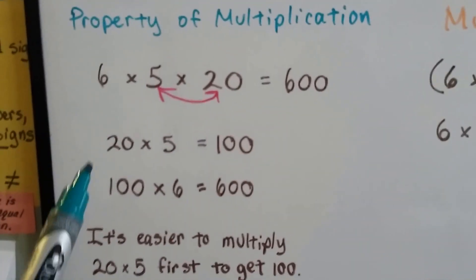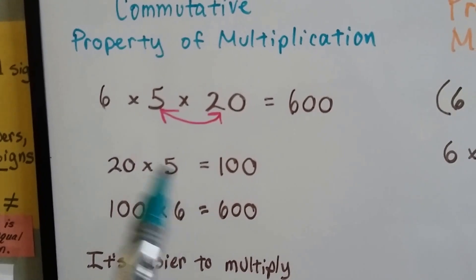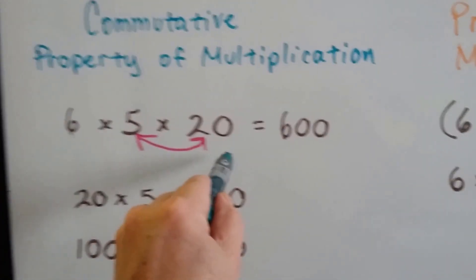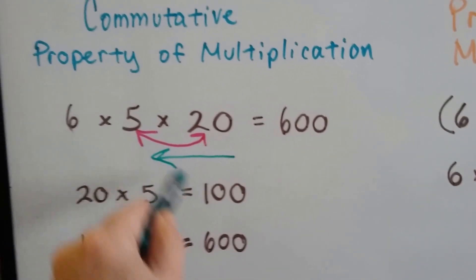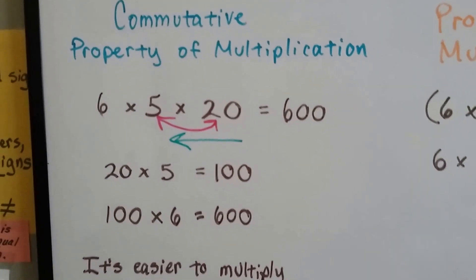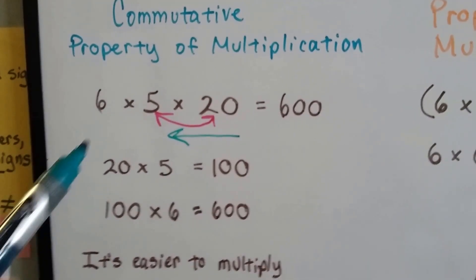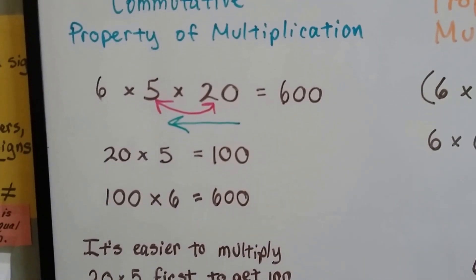So if we have a problem like 6 times 5 times 20, we can do it in the other direction. We can do 20 times 5, which is 100, then multiply it by 6 and get 600.